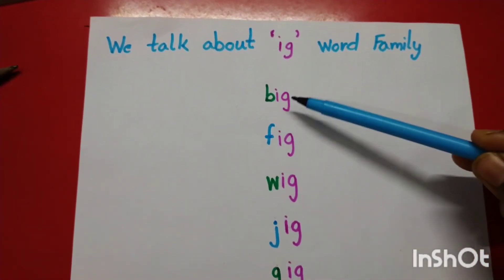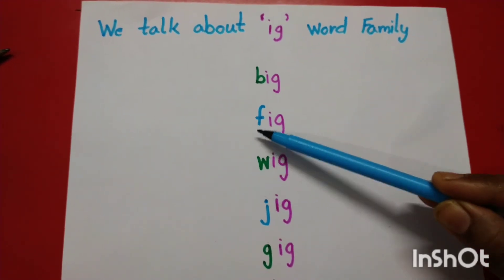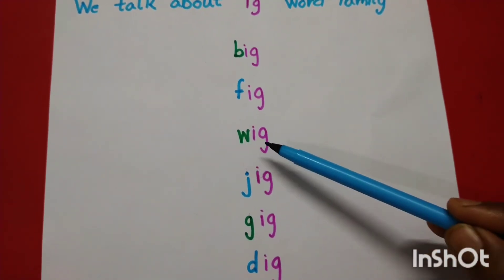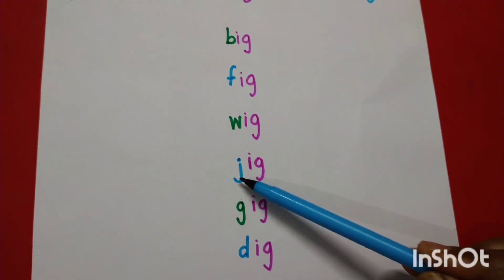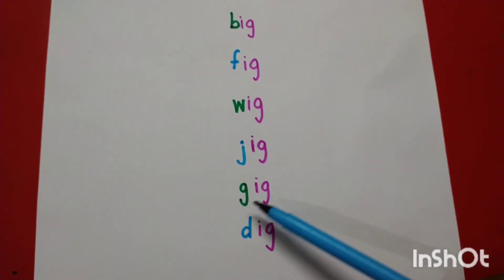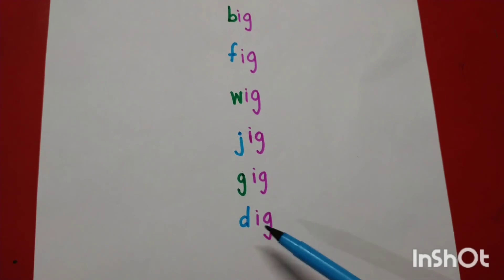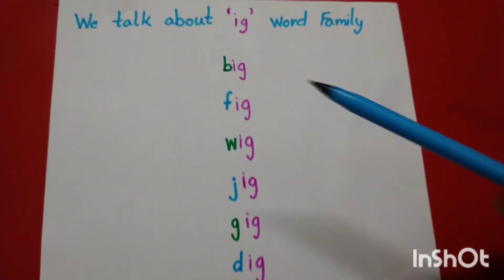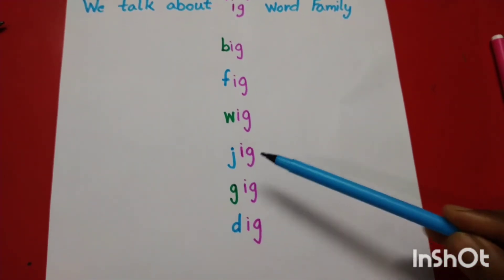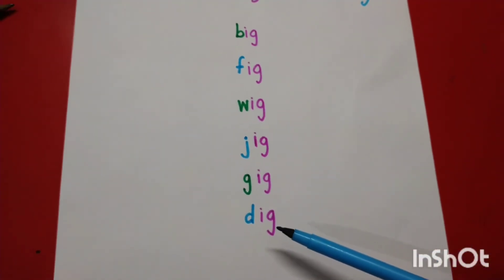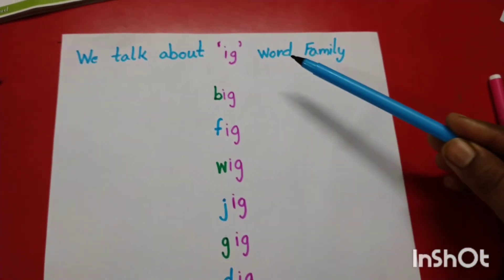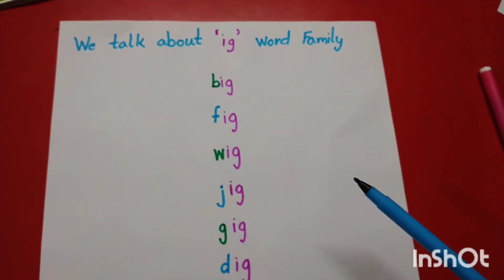B, Ig, Big. Fuh, Ig, Fig. Wuh, Ig, Wig. J, Ig, Jig. G, Ig, Gig. D, Ig, Dig. Big, Fig, Wig. Jig, Gig, Dig. Now your Ig word family is complete.